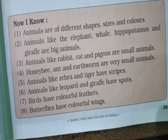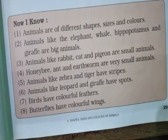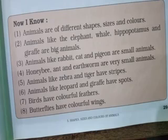They are called small animals. Honeybee and earthworm are very small animals. As you study in your textbook, honeybee, mosquito and earthworm are very small animals.